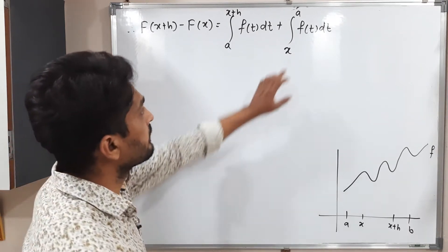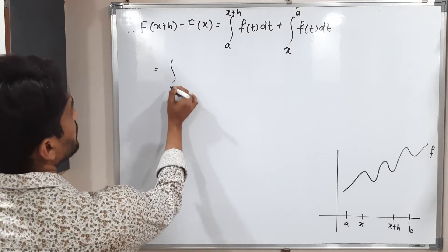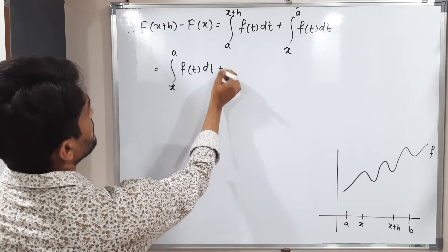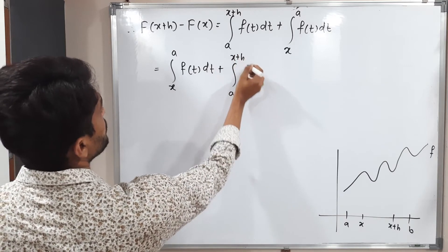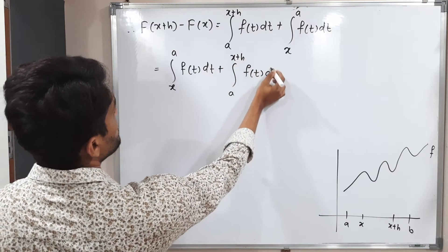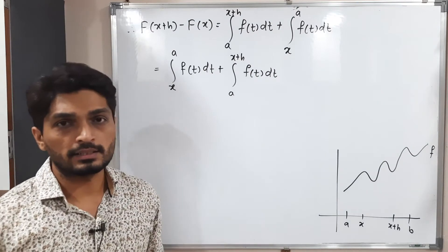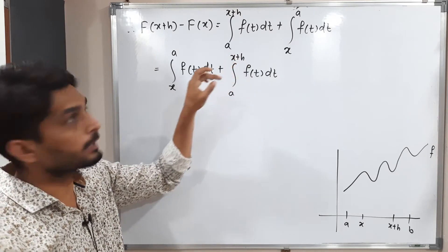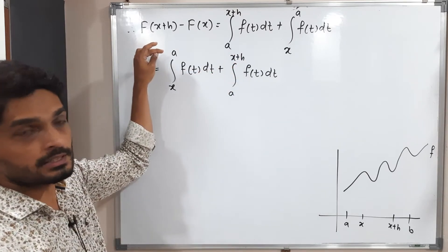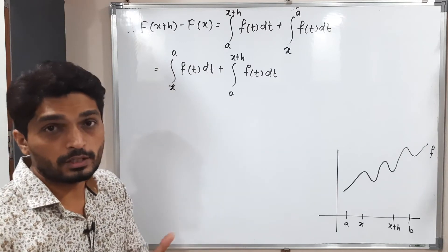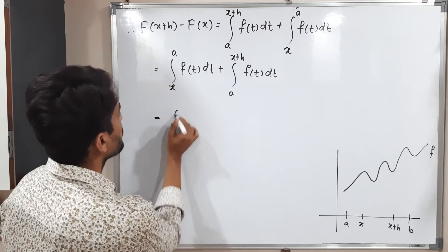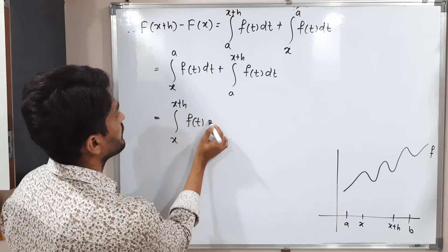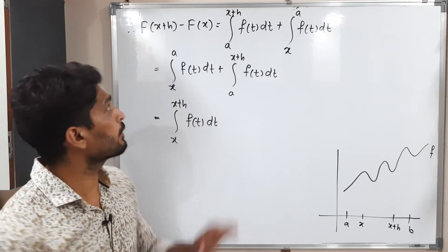We rewrite this as ∫ₓᵃ f(t) dt + ∫ₐˣ⁺ʰ f(t) dt. Since the upper limit of the first integral equals the lower limit of the second, we can combine them: F(x + h) − F(x) = ∫ₓˣ⁺ʰ f(t) dt.